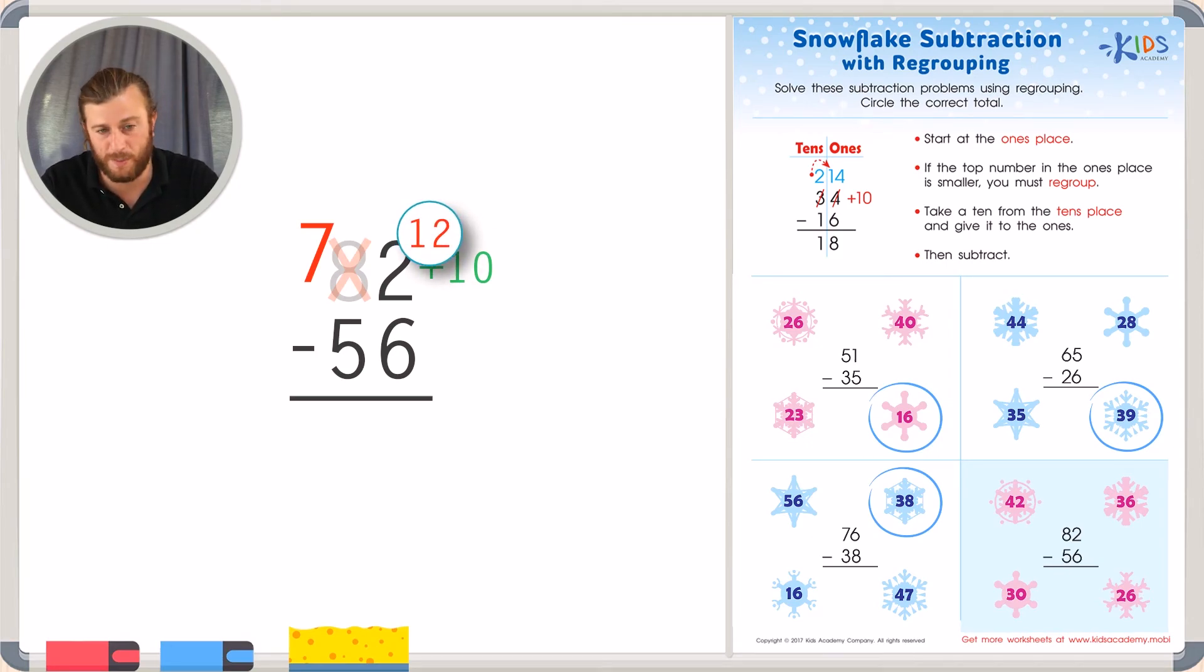Now we can just subtract the ones place. 12 minus 6, counting up from 6 to 12, that gives us an answer of 6. And then we can just subtract the tens place. 7 minus 5, counting up, is 2, giving us an answer of 26.